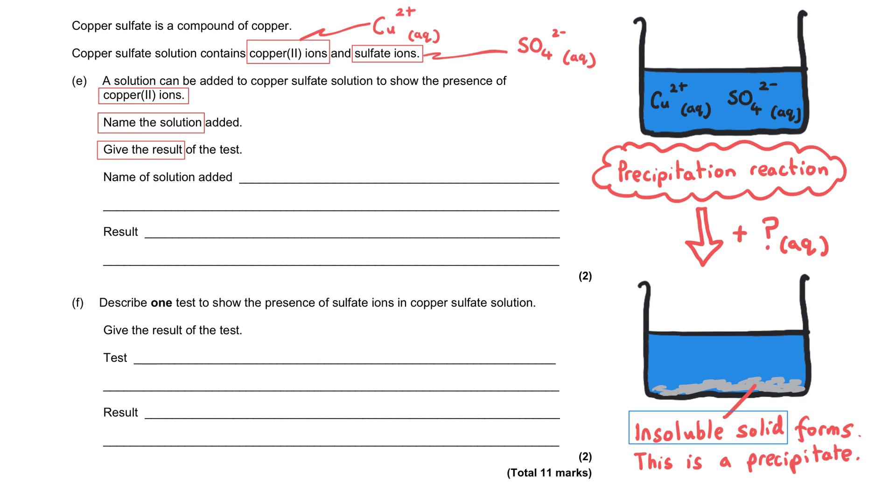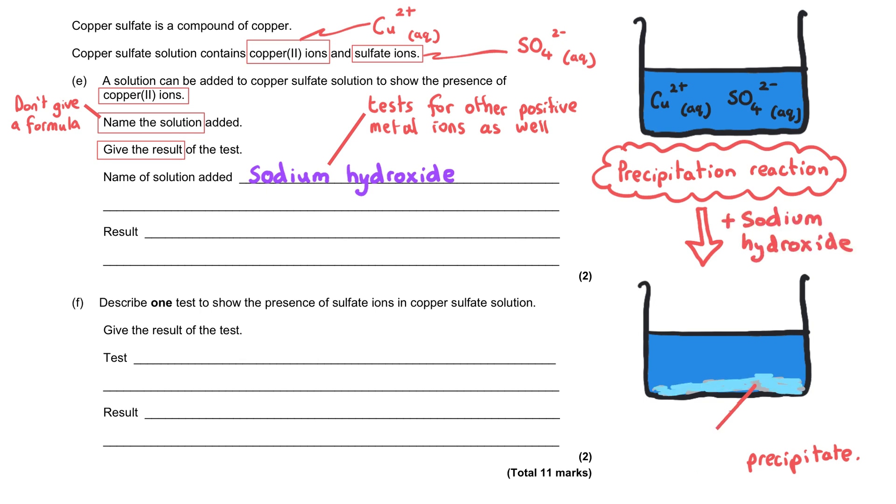We've been asked to name the solution that we should add here, so that means that a formula by itself will not be acceptable. The substance that gives a result that shows the presence of copper(II) is sodium hydroxide. The hydroxide ions from the sodium hydroxide react with the copper ions from the copper sulfate and we make copper hydroxide.